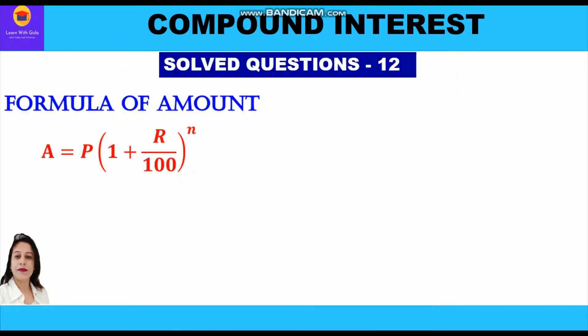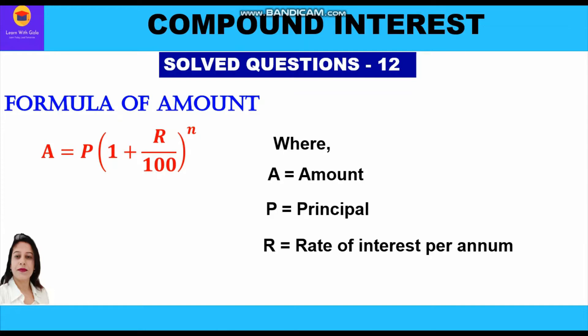This is the formula of amount: A is equal to P in bracket 1 plus r upon 100, whole raise to power n. Where A is the amount, P is the principal, r is the rate of interest per annum, and n is the number of years.